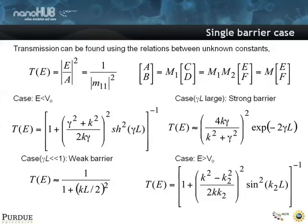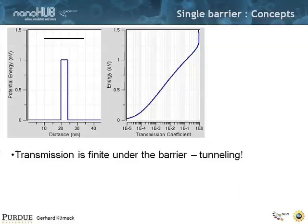You can also do typical approximations that you see in textbooks being done. I don't think those are so important. The key element is to realize that there is a modulation of the transmission coefficient above the barrier, and there is an exponential dependence below the barrier.